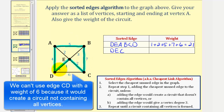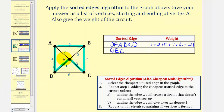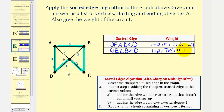So again, starting with vertex D, we'd have the circuit D, E, C, B, A, D with a total weight of one plus two plus seven plus five plus four, which is 19.